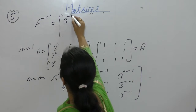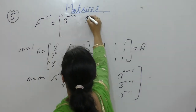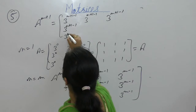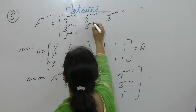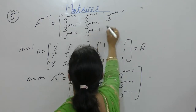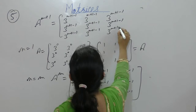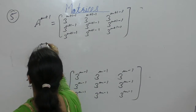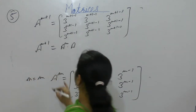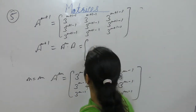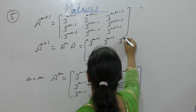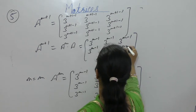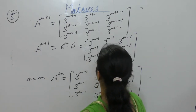Now we have to prove that the result is 2 for n equals to m plus 1. We need to show 3m minus 1, and prove that this equals 3^(m+1) minus 1. Now A^(m+1) is A^m into A, where A^m is the matrix with entries 3m minus 1, and A is 1.